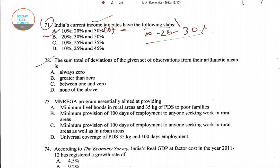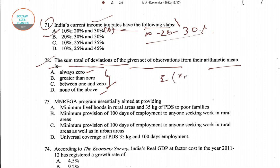In question number 72, it is given: the sum total of deviations of a given set of observations from the arithmetic mean is — options are: always 0, greater than 0, between 1 and 0, or none of the above. We know the sum total of deviations from the arithmetic mean is always 0, so option A is the right answer for question number 72.